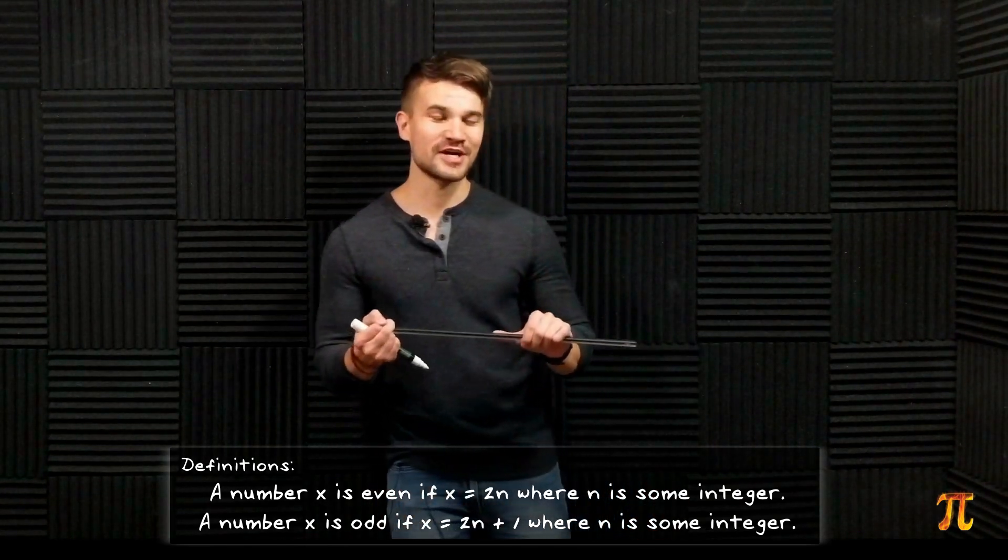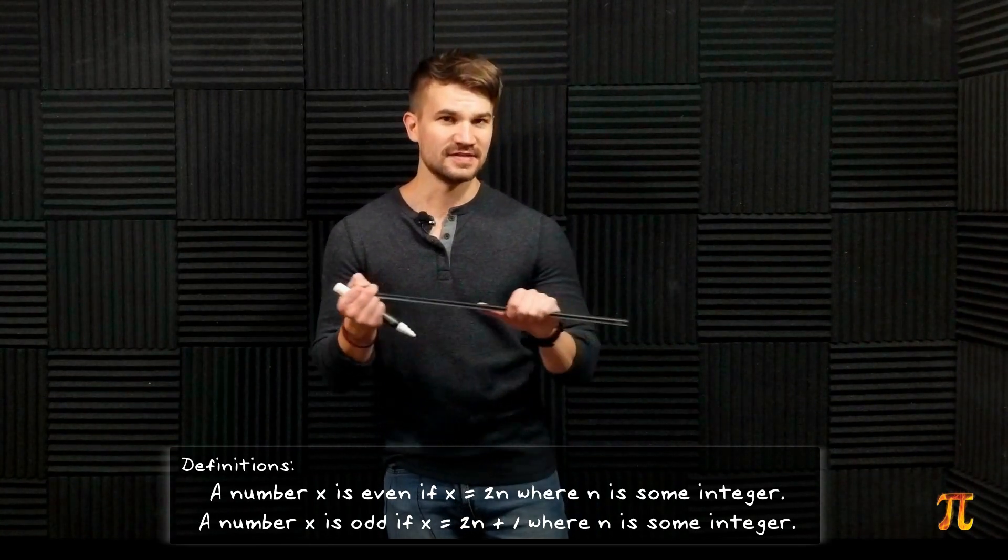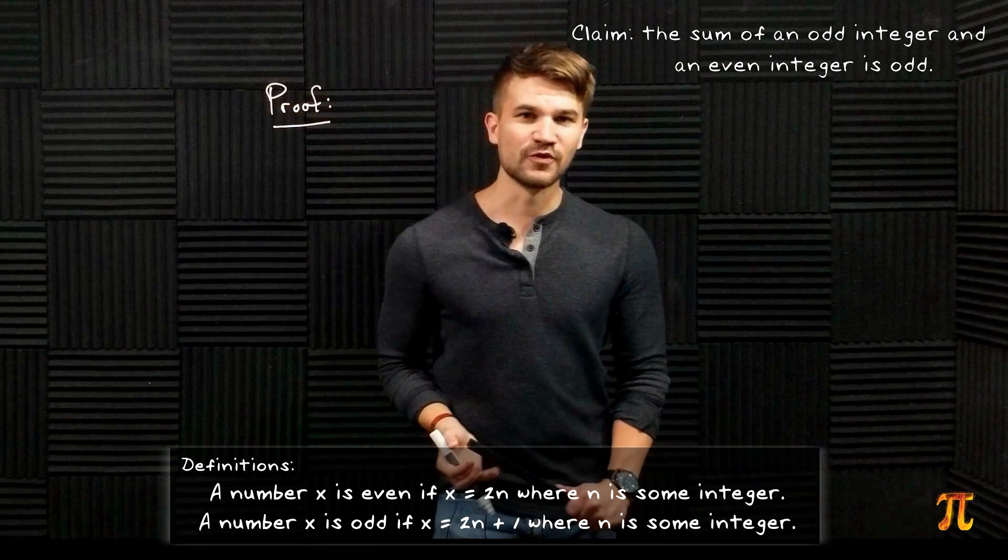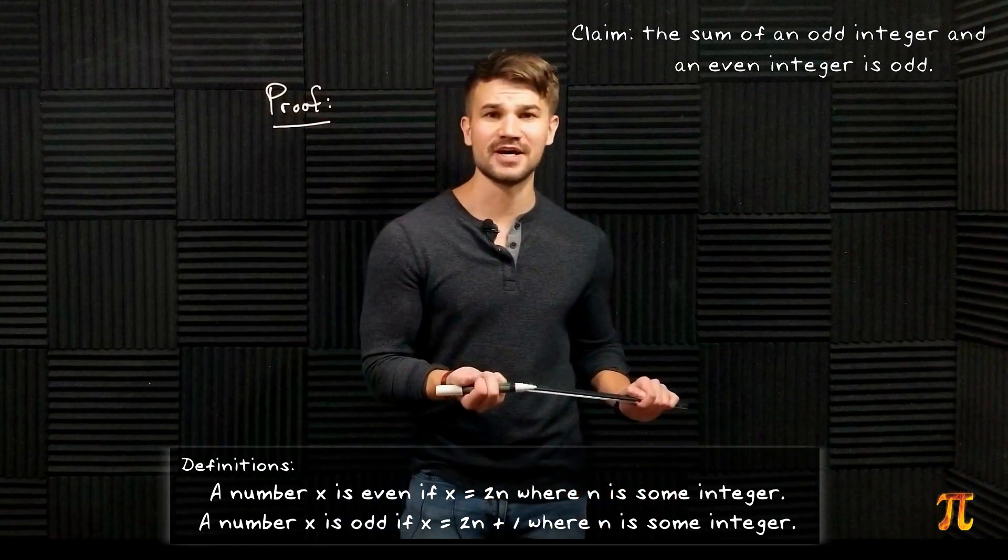All right, and finally we'll try proving that the sum of an odd number and an even number is an odd number. So like before we're going to be general about it. Let's let x be our even number and y be our odd number.